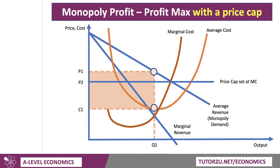So with the price cap, the regulator is saying: no, you can't charge P1 — we're going to cap you. The price you can charge now is P2. And to be effective, the price cap needs to be below where the price would normally be. I've got a separate video looking at the advantages and disadvantages of price capping, and I do refer you to that if you want a longer explanation, analysis, and evaluation of the economics of a price cap.